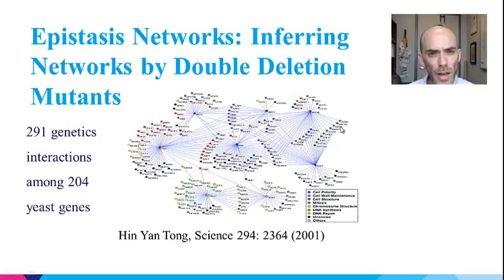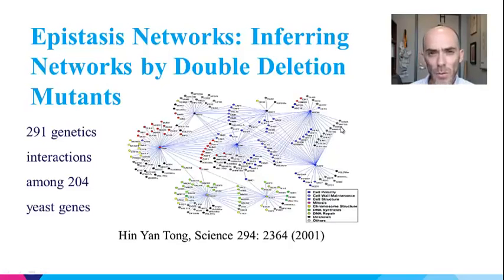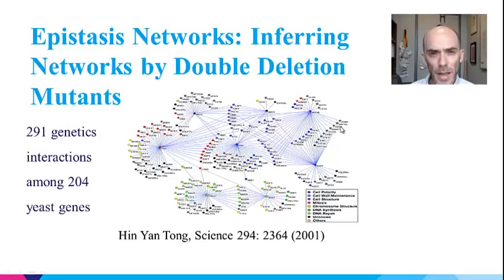If you knock down a single gene in yeast, you may not get a phenotype and the yeast will grow fine. However, if you knock out two genes simultaneously, those two genes may cause the yeast to stop growing — and that is an epistasis interaction.